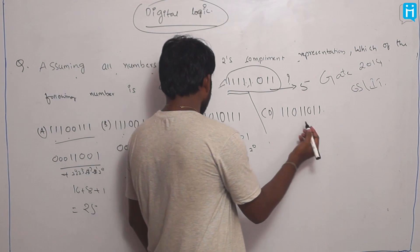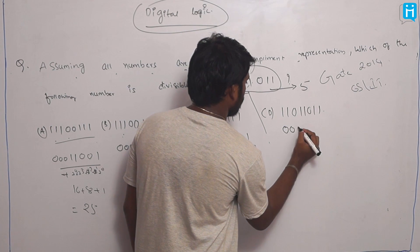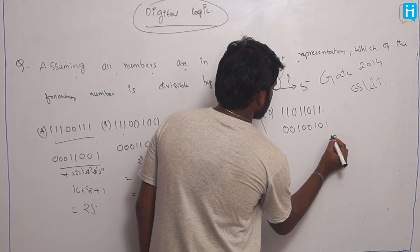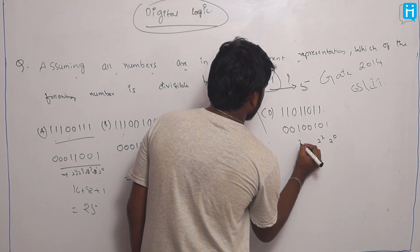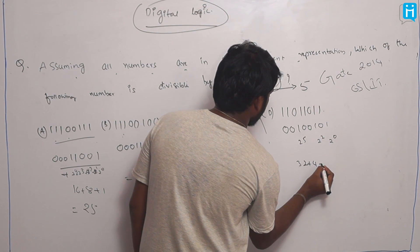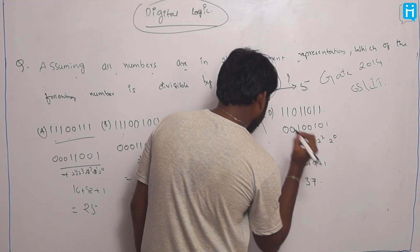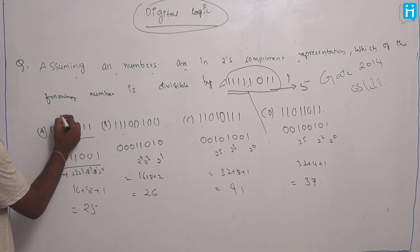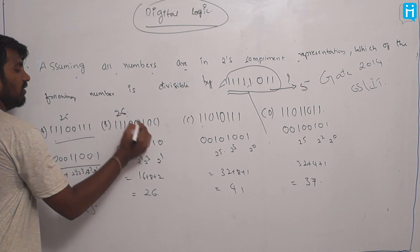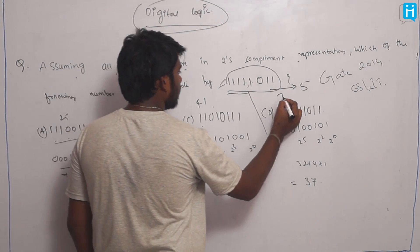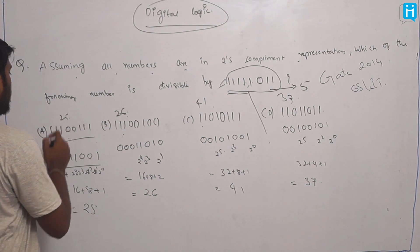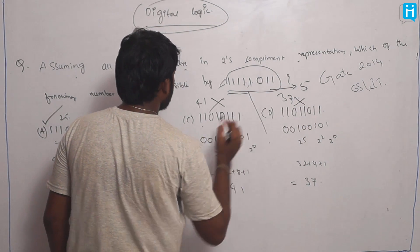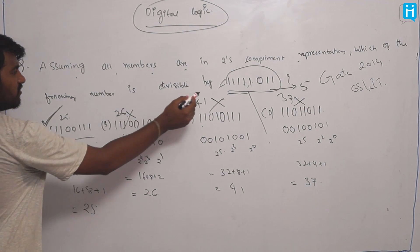For the fourth option, converting from 2's complement: the active bits give 2 power 0, 2 squared, and 2 power 5, which is 32 plus 4 plus 1 equals 37. So the decimal values from 2's complement are: first option 25, second 26, third 41, fourth 37. Which of these is divisible by 5? 25 is divisible by 5. 26? No. 41? No. 37? No. So the answer is 25 — that is the number divisible by 5.